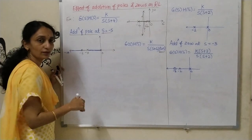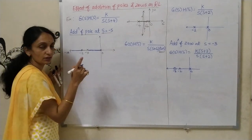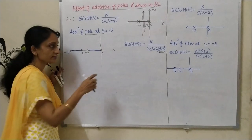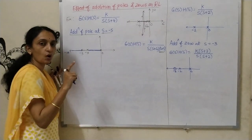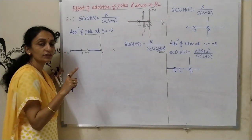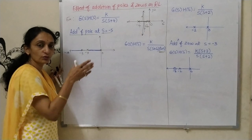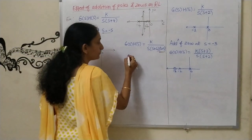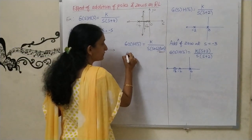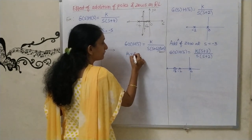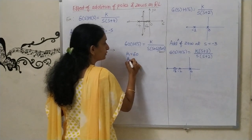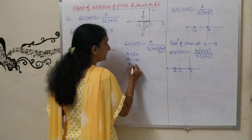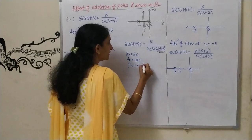We have solved a numerical with three real poles. When three real poles are there, there will be three root loci, and as there are no zeros, all three root loci will terminate at infinity. To go towards infinity we calculate angles: β₁ = 60°, β₂ = 180°, and β₃ = 300°.